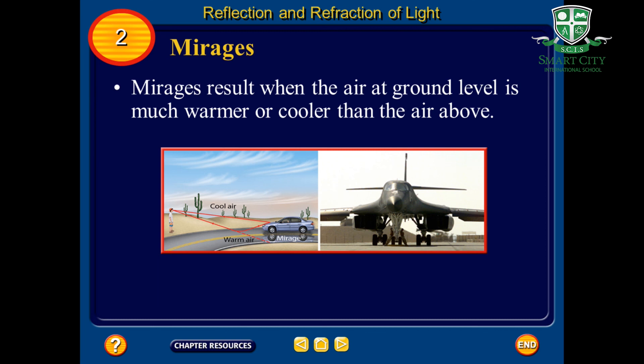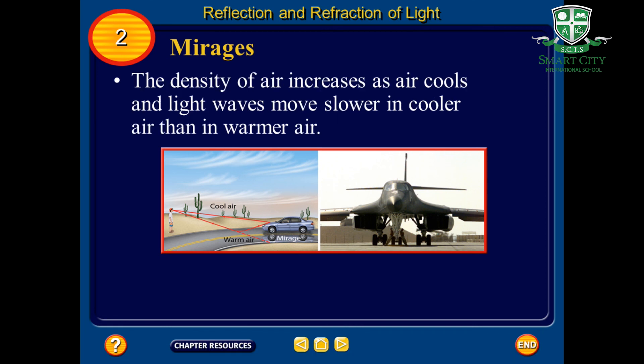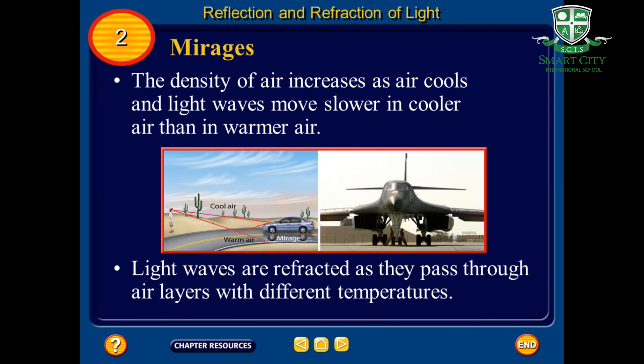Mirages occur when the air at ground level is much warmer or cooler than the air above. The density of air increases as it cools. Light travels more slowly in cooler air than in warmer air. Light waves are refracted as they pass through air layers with different temperatures.